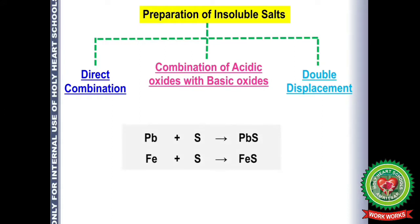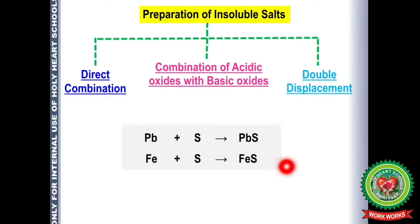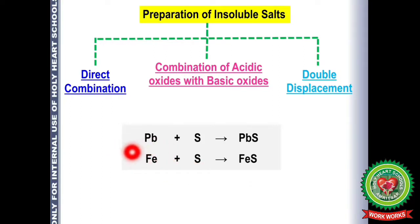For direct combination of insoluble salts, a metal reacts directly with a non-metal to form a product. For example, lead + sulfur → PbS (lead sulfide); Fe + S (with heating) → FeS (ferrous sulfide). These reactions are also known as synthesis reactions.